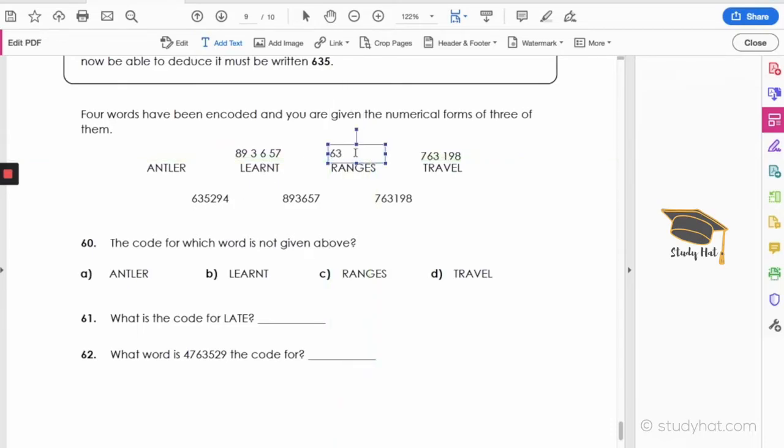So 6, 3, 5, 2, 9, 4 is RANGES. So the word that is missing is ANTLER. We don't have the code for ANTLER.